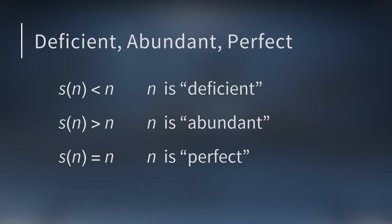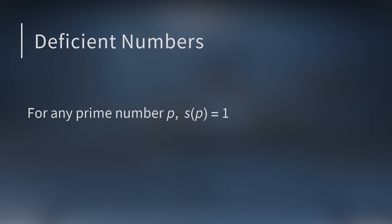This raises a few interesting questions. One is, how many integers are there in each of these three categories? Is there an infinite number? We can actually jump in and answer some of these really quickly. Deficient numbers are straightforward, because for any prime number p, s of p equals one. So prime numbers are all deficient. Since there's an infinite number of primes, we know there's an infinite number of deficient numbers.